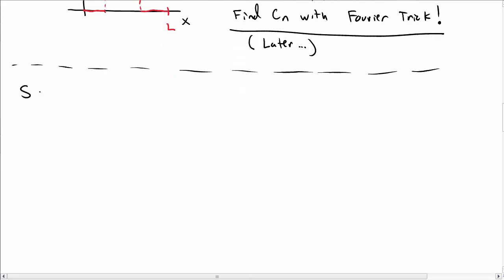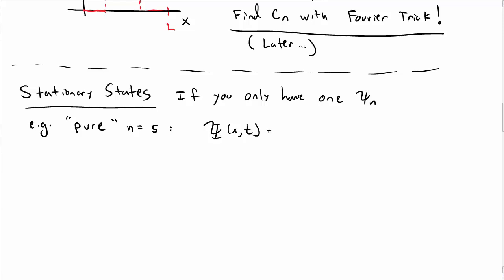What I want to talk about now, though, is the idea of stationary states. So let's say you only have one particular n value for your ψ sub n. In particular, let's say it's a pure n equals 5 state. So capital Ψ is just ψ_5 e to the minus i E_5 t over ℏ.